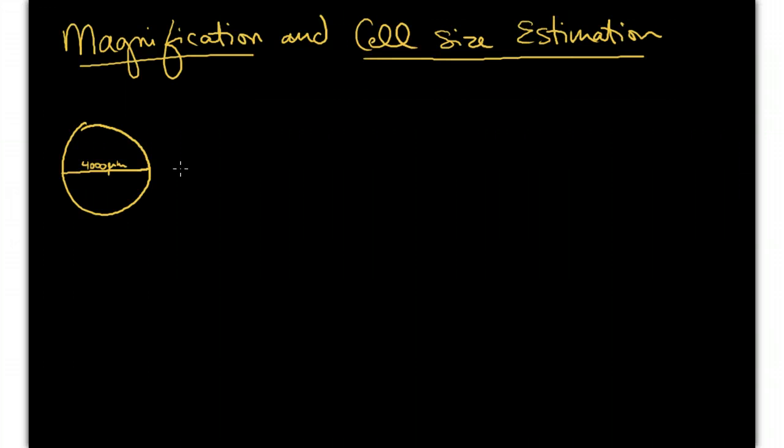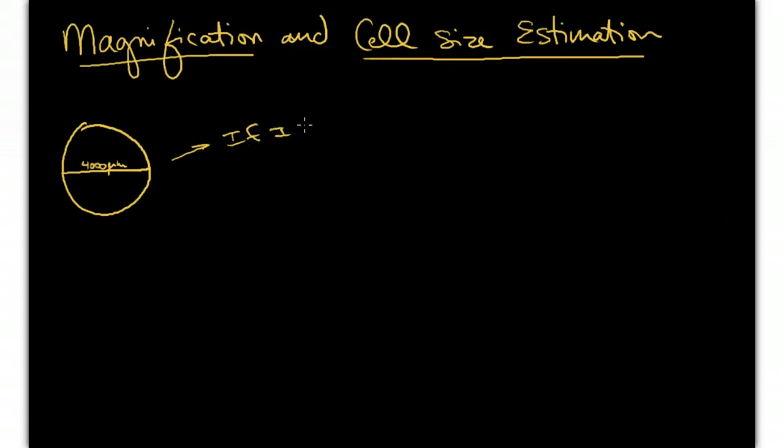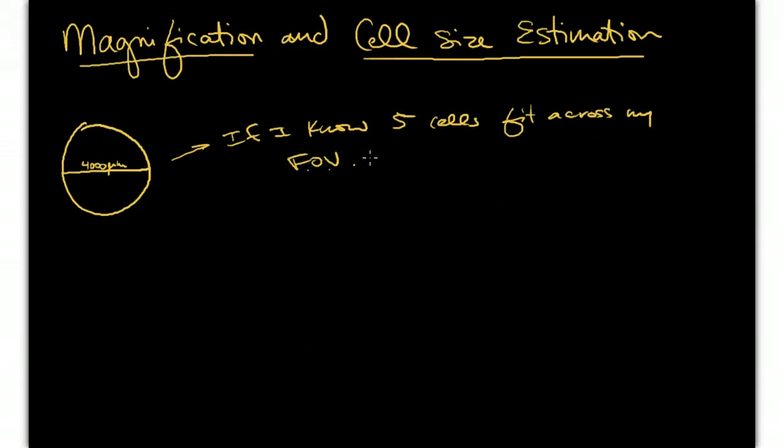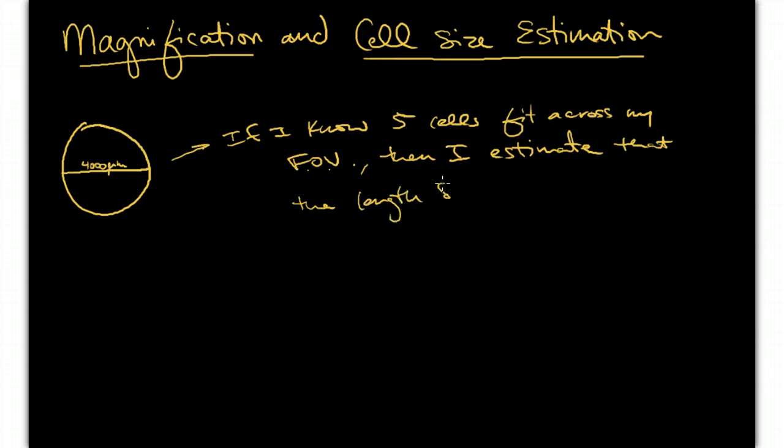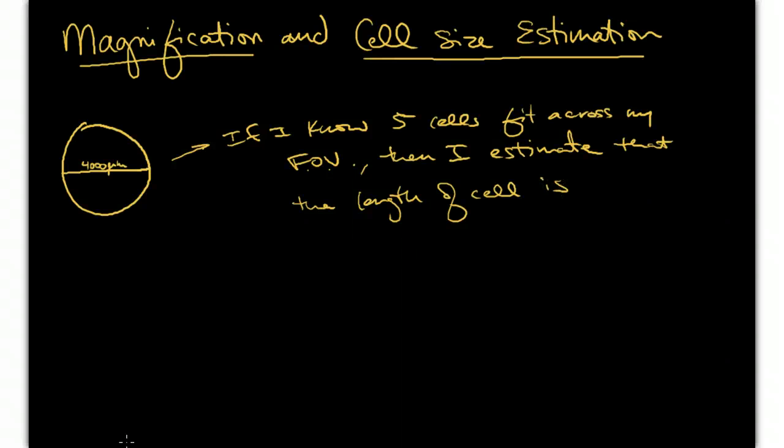Now before we actually, so let's go and finish the problem here. So let's say, if I know five cells fit across my field of view, then I can estimate that the length of the cell is 80 micrometers. Because five cells are going to fit across this field of view.